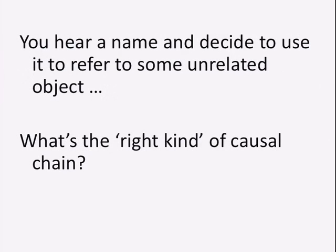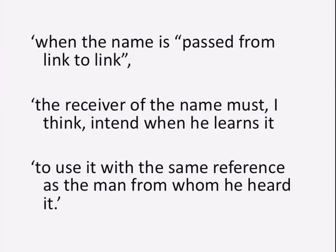What is the right kind of causal connection? Kripke says it's when the name is passed from link to link and the receiver of the name intends, when they learn it, to use it with the same reference as the person from whom they heard it. So as long as I intend to use 'Schwarzenegger' to refer to the same person as you do, I'm still functioning as a link in the chain. If I swap it out and apply it to my dog, I've stepped out of the chain. Intention is one place where it comes in.